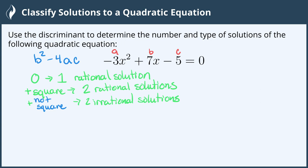If we calculate and get a negative number, it doesn't matter if it's a perfect square or not, this will give us two complex solutions. Complex meaning it will have an imaginary part. Let's go ahead and calculate ours.